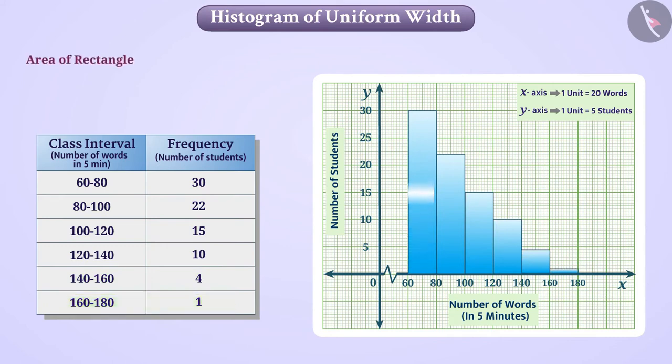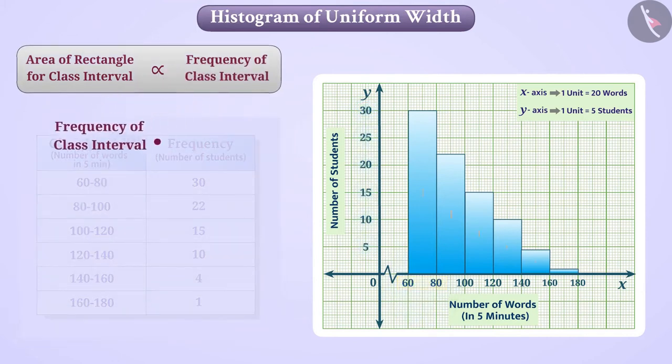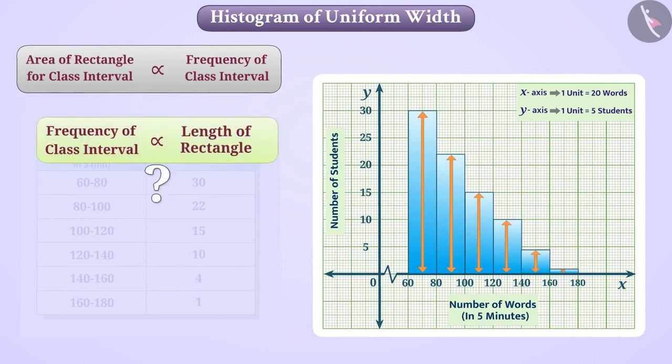The area of rectangle to be drawn for a class interval in a histogram is proportional to the frequency of that class interval. But here we have kept the frequency proportional to the length. Is it fair?